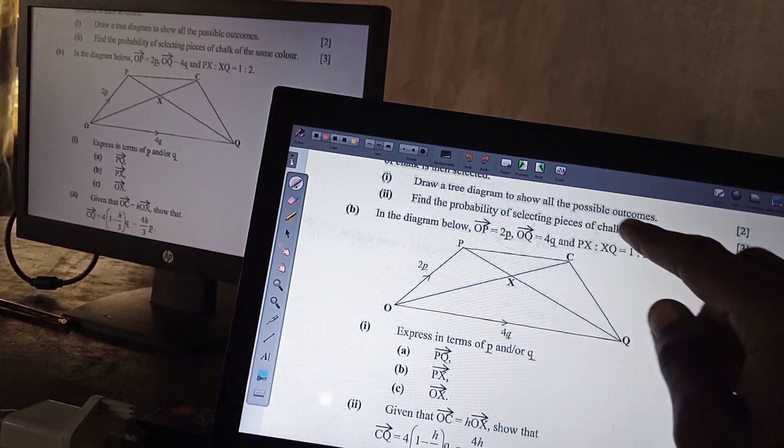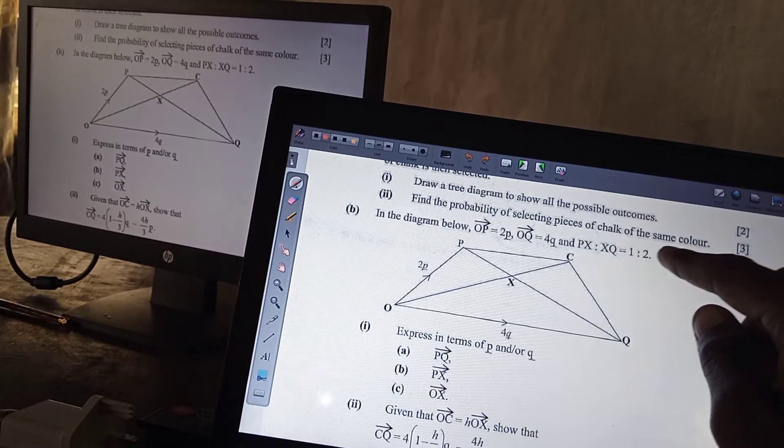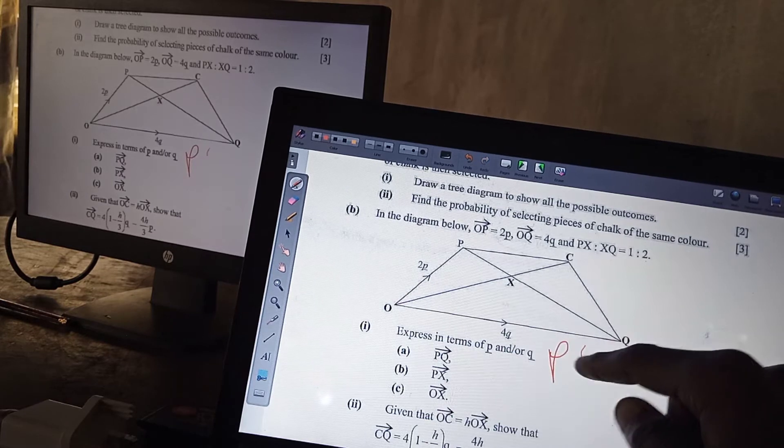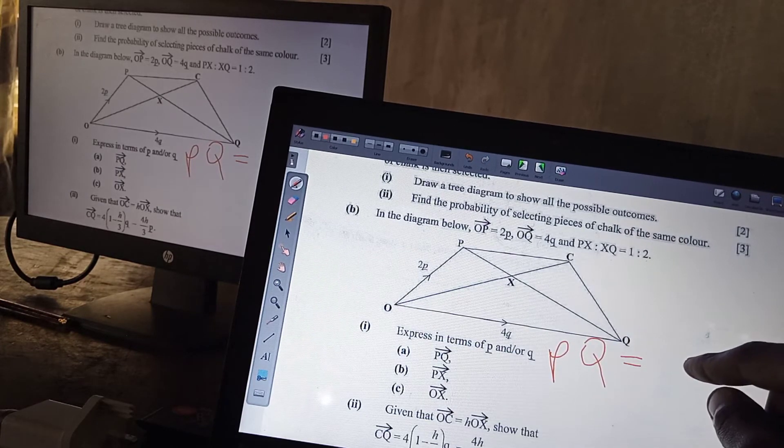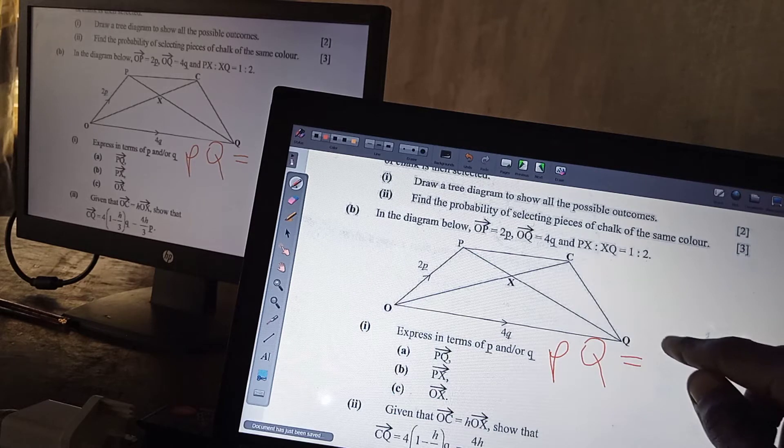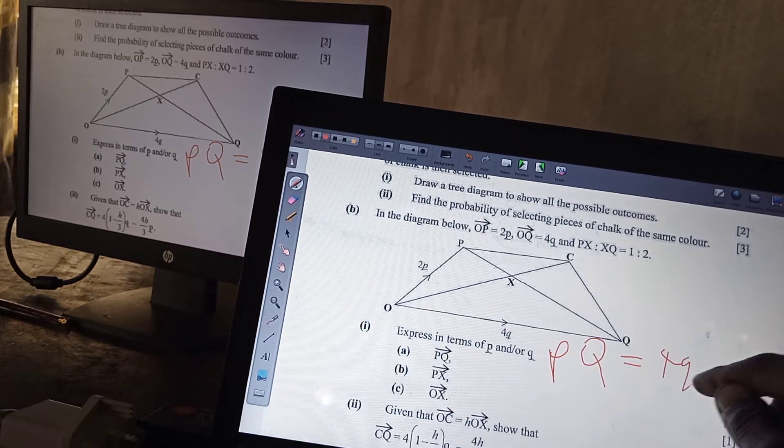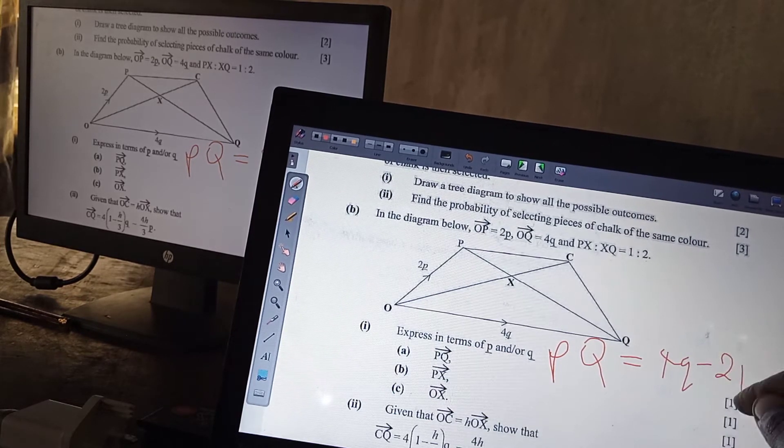What you need to pay attention to is this. You've already found PQI. You've found PQ, which is equal to 4Q minus 2P. Alright.